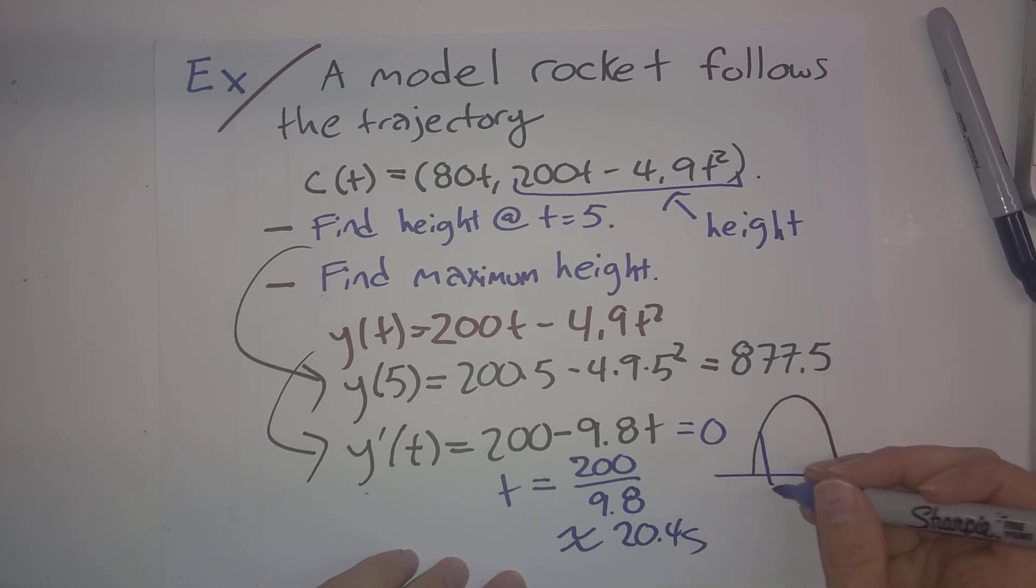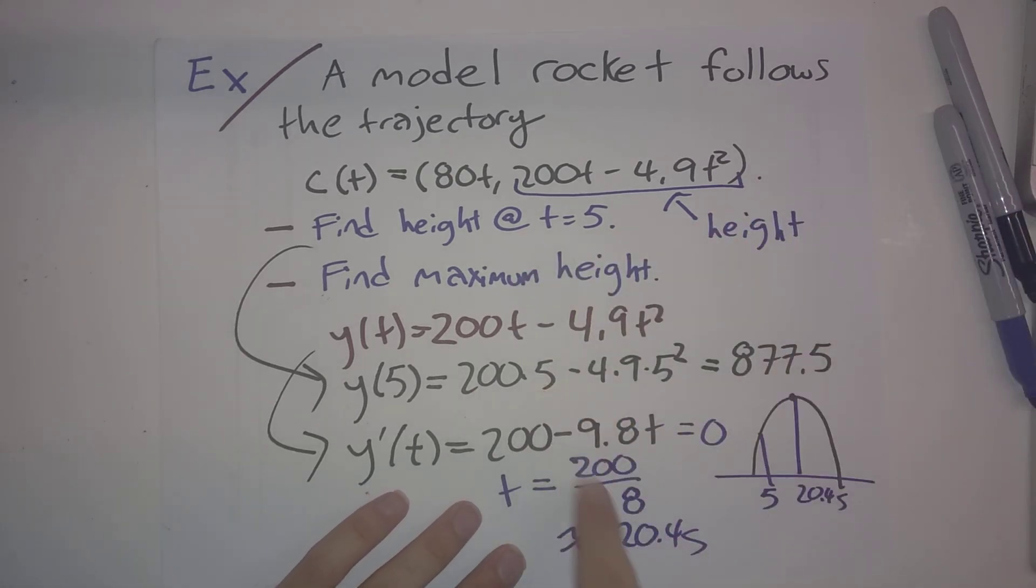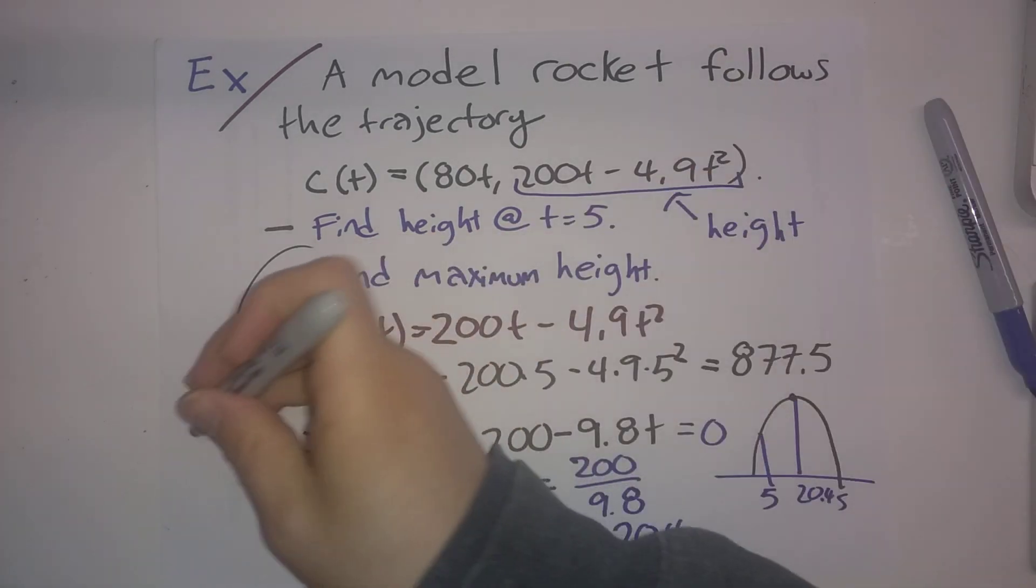So here was t = 5. Its maximum height happens at 20.4 seconds or so. And we weren't asked. This is the time at which the maximum height occurs. So there's one more thing we have to do here,